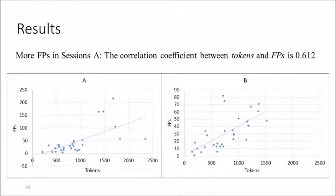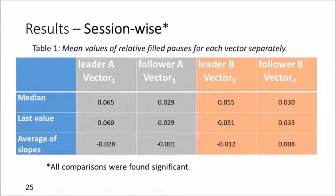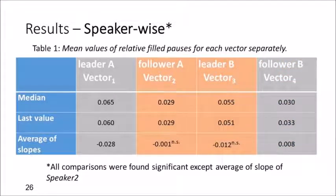The first descriptive finding is that the number of filled pauses correlates with the amount of speech, with a correlation coefficient of 0.612. Sessions A were generally longer than sessions B. Session-wise, all comparisons between speakers in the same session were found statistically significant in the median comparison, the last value, and the average of slopes, in congruence with our session-wise hypothesis. We use t-tests for these statistics. Speaker-wise, all comparisons were found significant except for the average of slope for speaker 2.